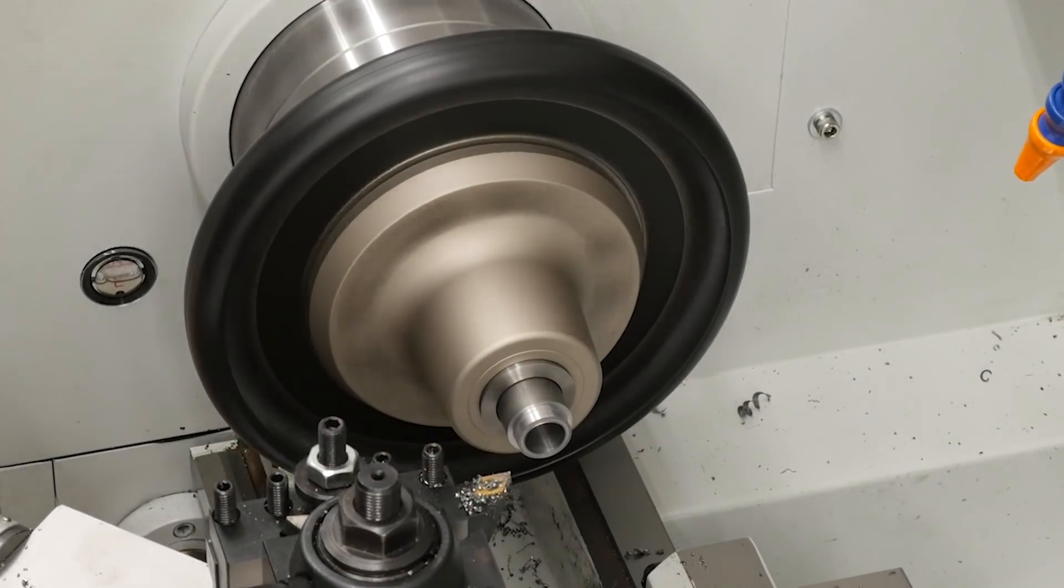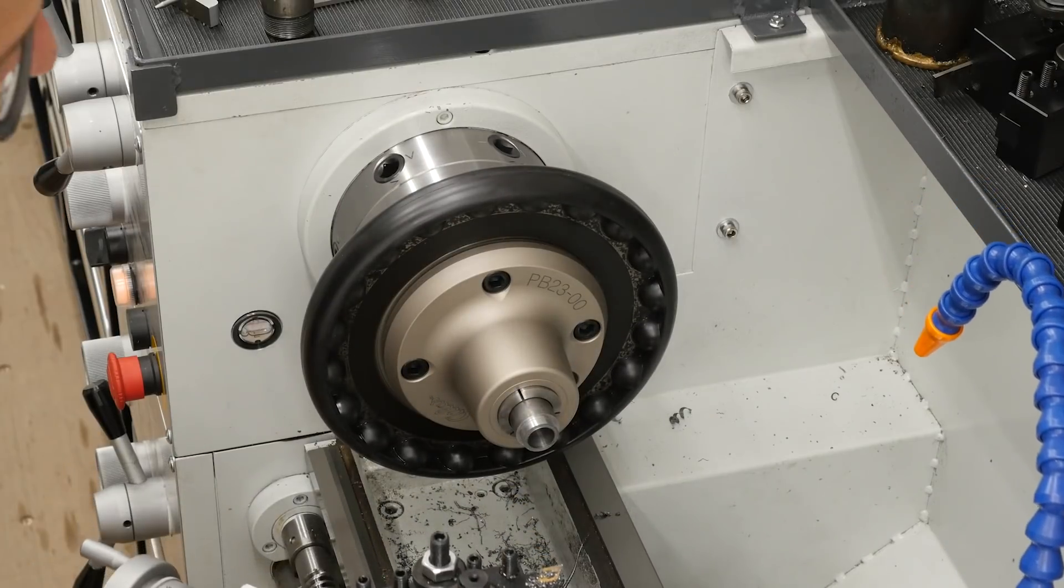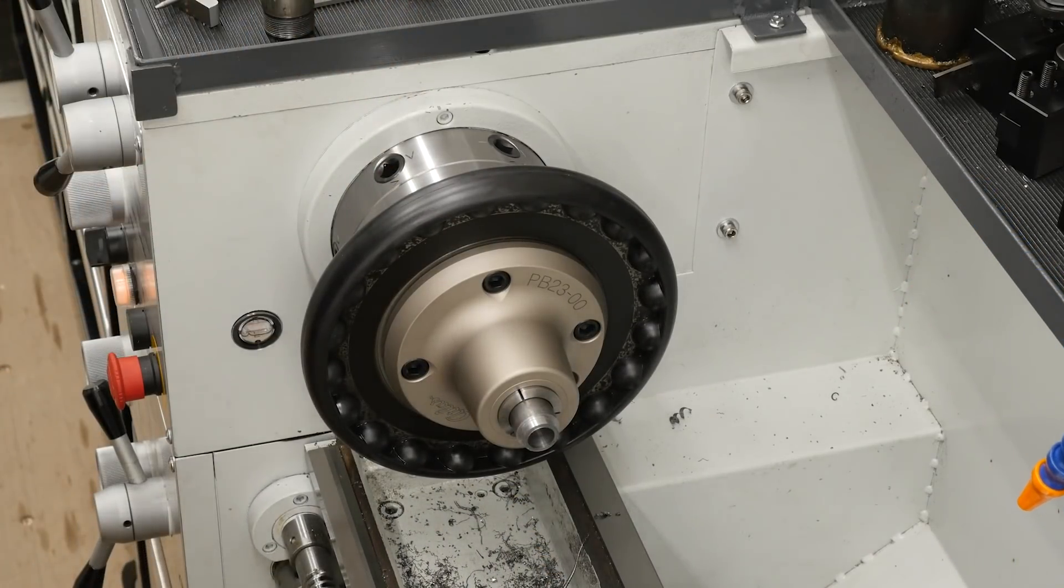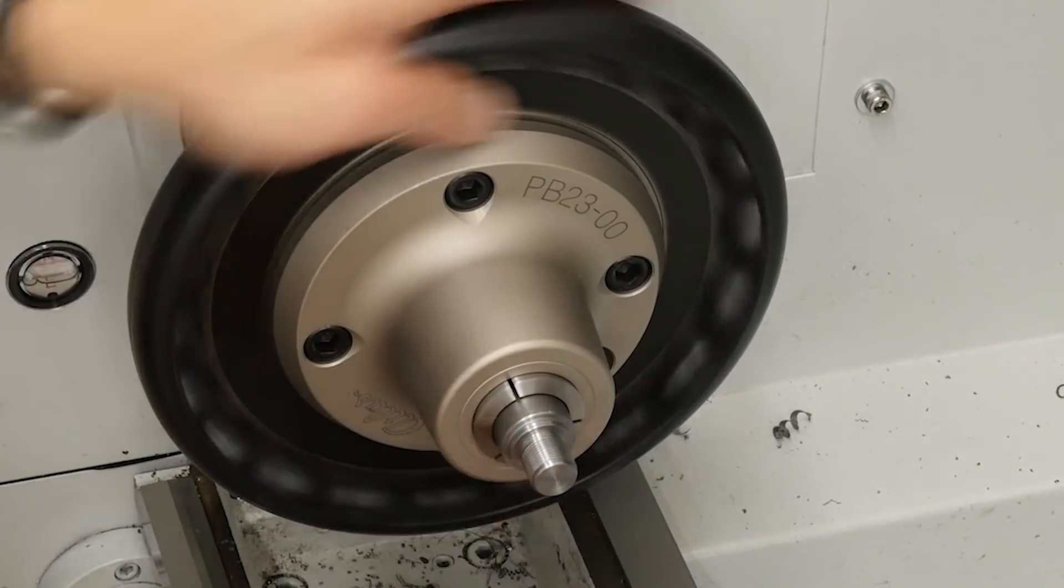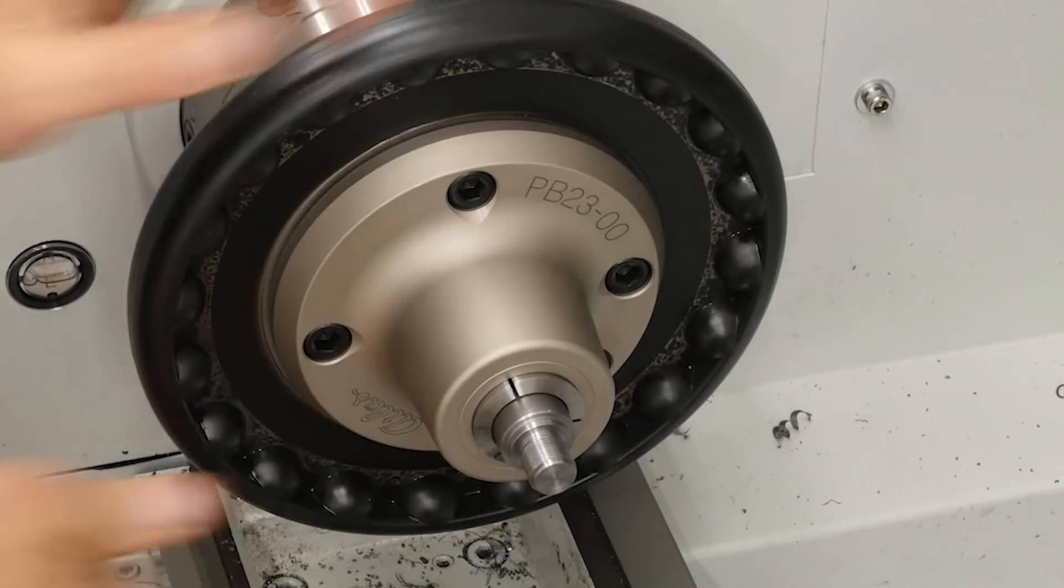Do whatever it is we want to do. Stop the chuck. Now we'll see just how easy it is to switch over from one item to another. Just loosen it, put something else in that we want to use and then tighten it. It's just that easy.